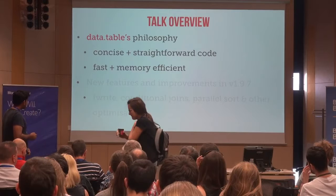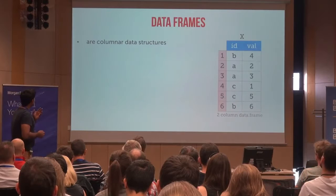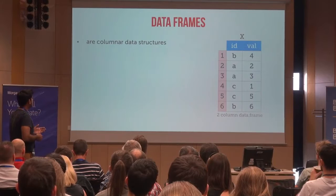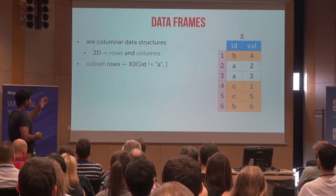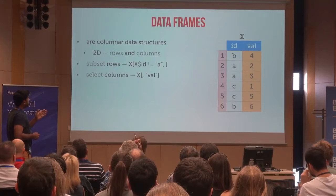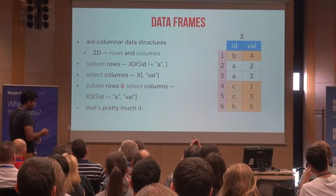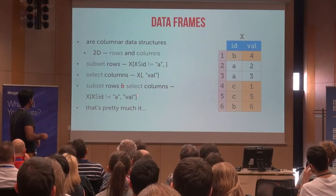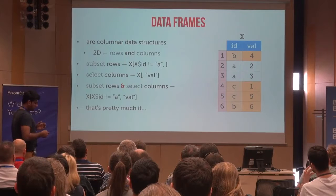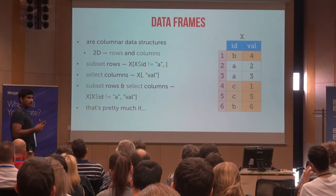Let's start with DataTable's philosophy. DataFrames are two-dimensional columnar data structures with rows and columns. You can subset rows by providing an expression in the first argument of the DataFrame, or select columns with the second argument. You can do both to get certain rows and whatever columns you want to select. This function basically allows you to subset rows and select columns.